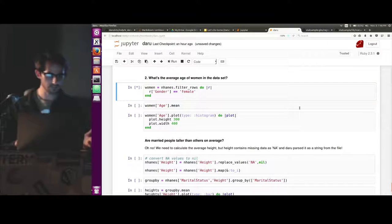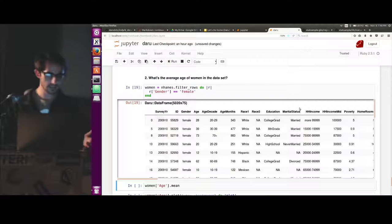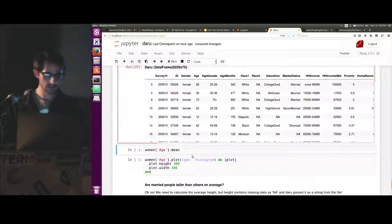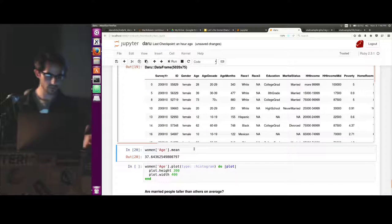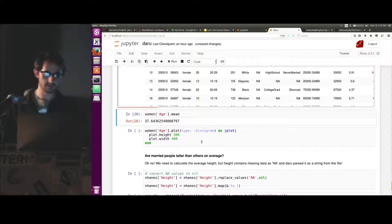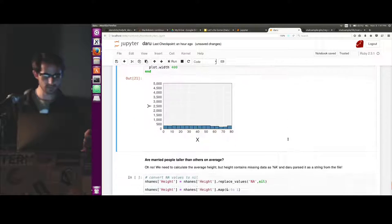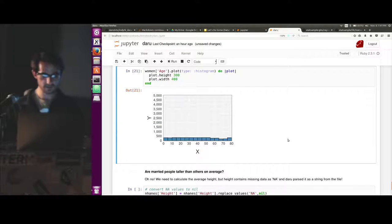And that gives us a subset in our women variable. And we just call mean on the age variable. Or again, I like to just plot things and get a better sense. It's pretty evenly distributed all the way from children to 80 to 90 year olds.